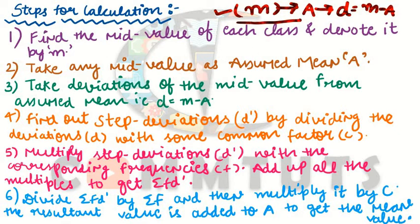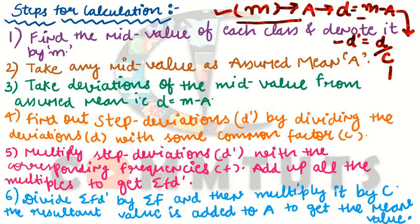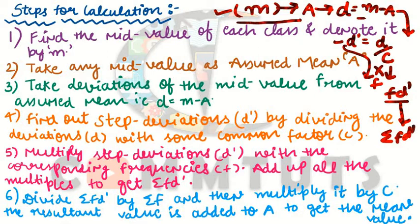This much we have already done in the shortcut method. Now in step deviation method, one more step is added: after deviations, you also have to calculate step deviation, that is d', which is deviation divided by the common factor. Once you have d', multiply it with the corresponding frequencies from the question to obtain fd'. Then sum all fd' values to obtain Σfd'.